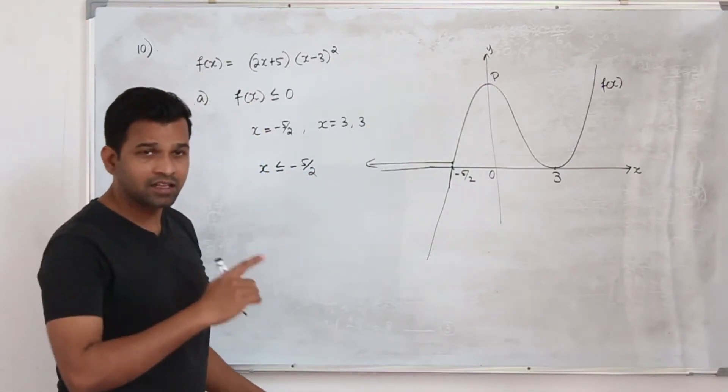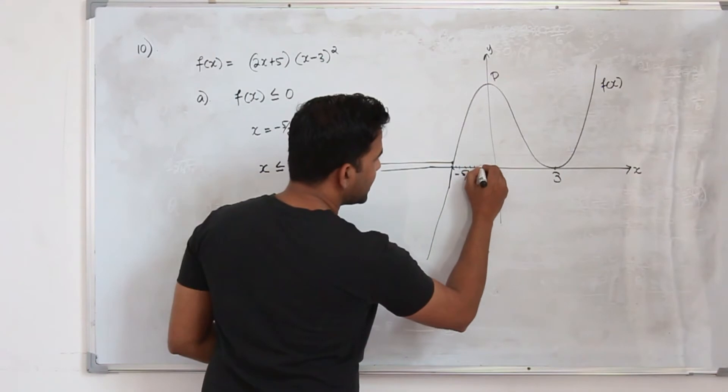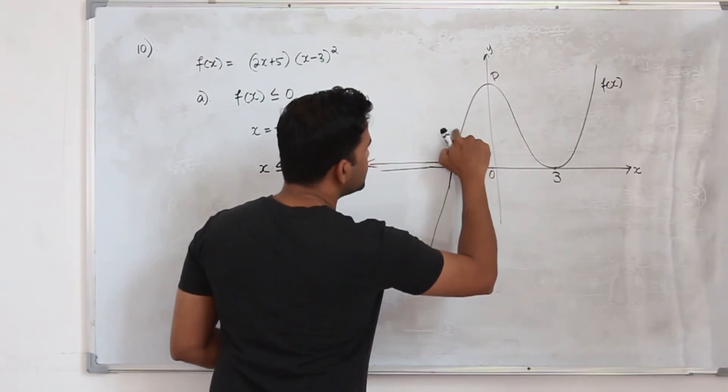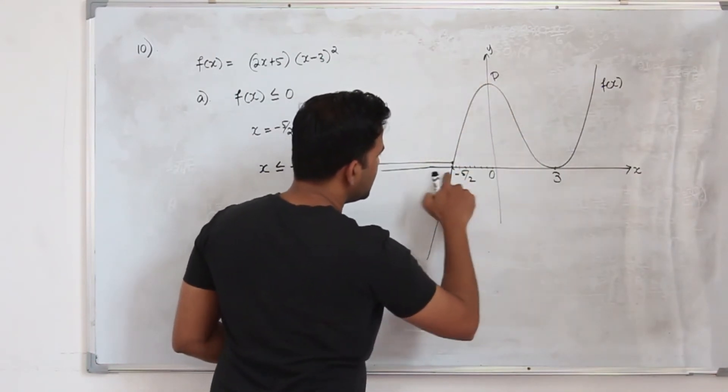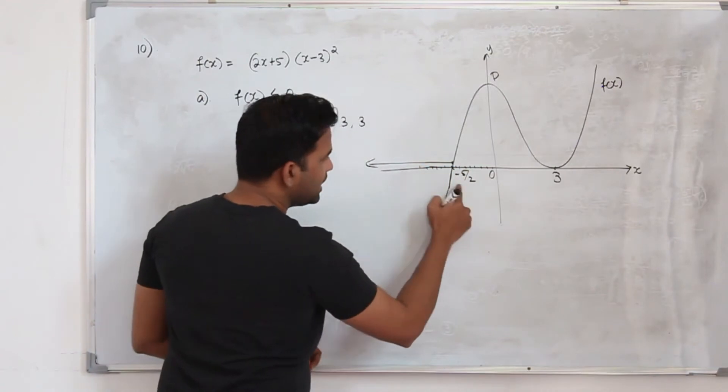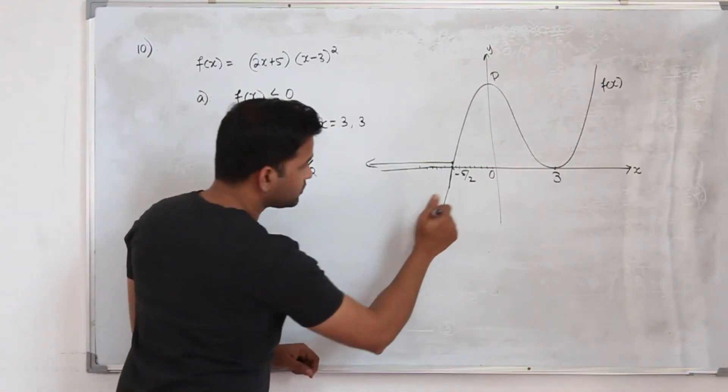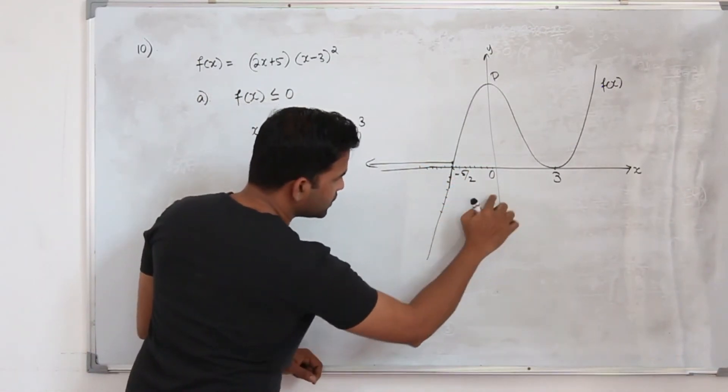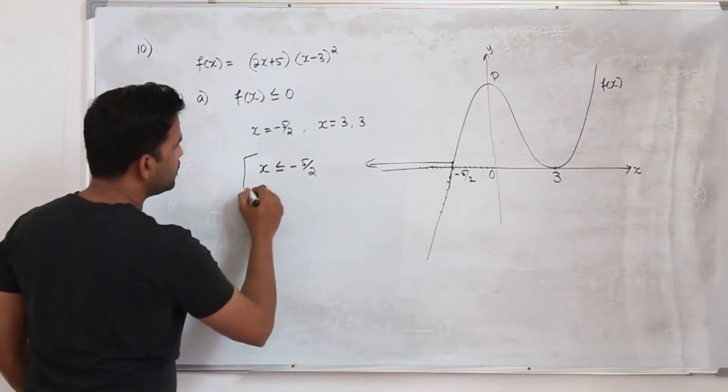Don't put greater than or equal to. Greater than means we are talking about these x values. Here the function takes only positive values. But if you take anything less than minus 5 by 2, the value of the function is negative. So this is our solution.